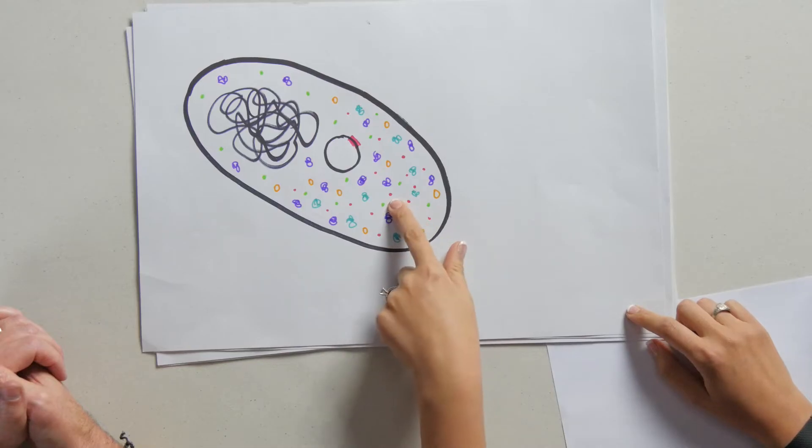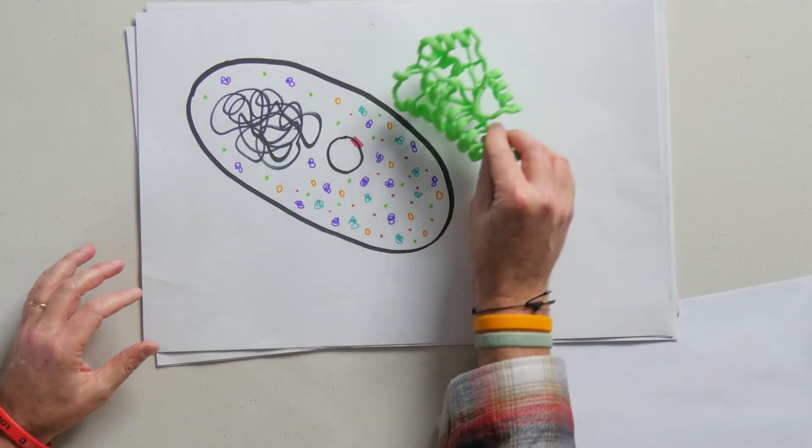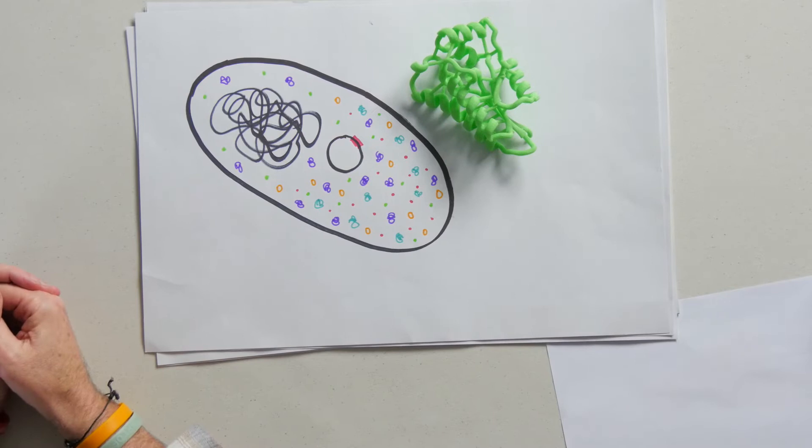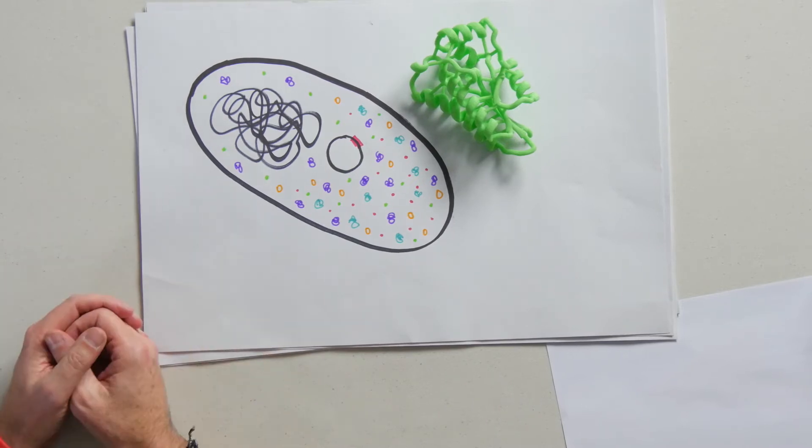And you can see there's a whole bunch of different proteins. So it's making the protein we want, the red one, but it's also making other stuff. And what I have here is a 3D printed model of a protein. And you can kind of see the complexity of the structure. And what we want to do is separate all the other proteins out until we get our red fluorescent protein.